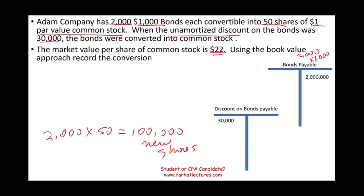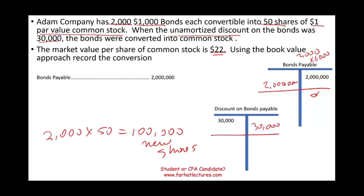Let's start this process. If I'm removing my bonds payable, I have to debit bonds payable of $2 million, bringing bonds payable down to zero. If I'm removing the bonds payable, I also have to remove the discount on bonds because discount on bonds is a contra liability. Therefore, I'm going to credit $30,000 to remove the discount on bonds.